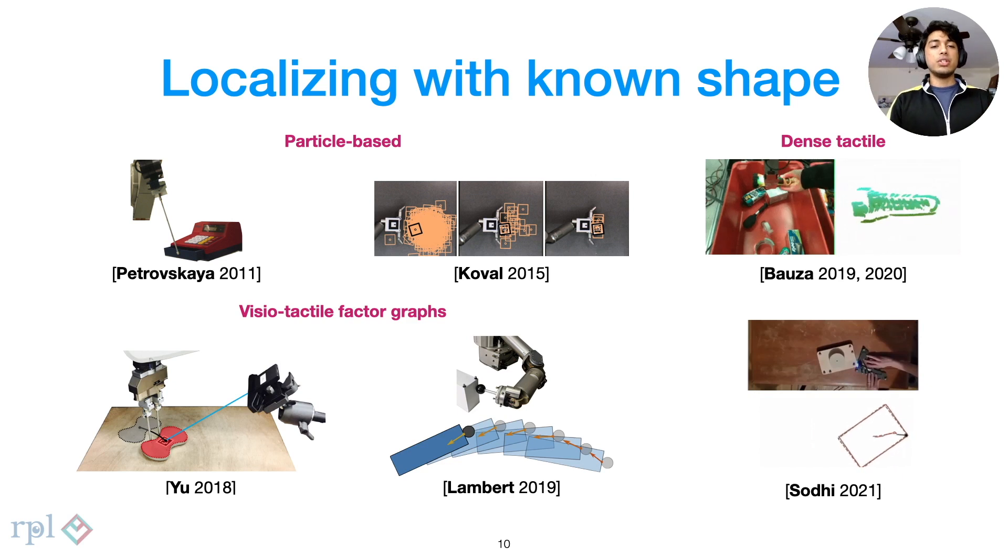Factor graph based methods have shown great success fusing touch and intermittent vision for tabletop problems. And more recently, dense tactile signals have also been interpreted for localizing in the hand and for planar pushing. All these methods consider the situation where you have an accurate pre-computed model of the manipulant.